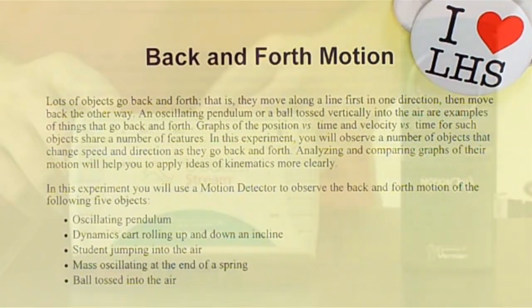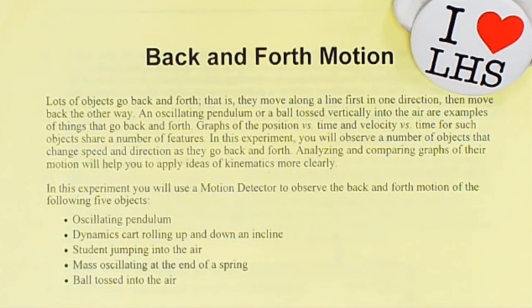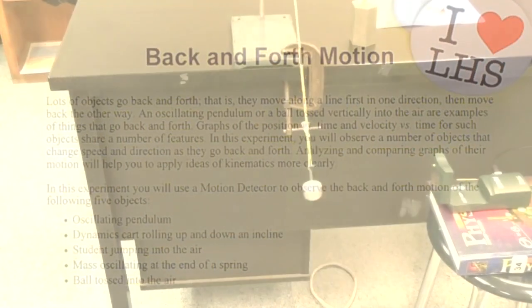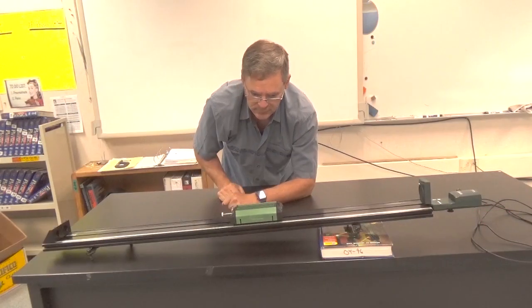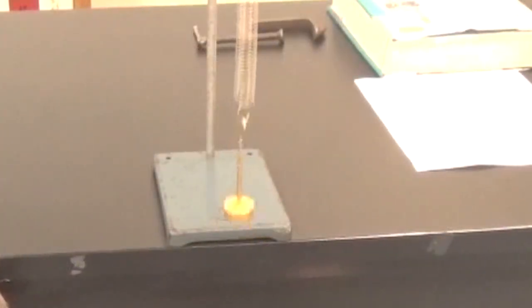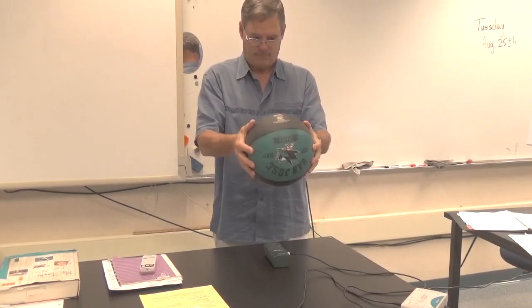In this experiment, you will use a motion detector to observe the back and forth motion of the following five objects: oscillating pendulum, dynamics cart rolling up and down an incline, person jumping into the air, mass oscillating at the end of a spring, ball tossed into the air.